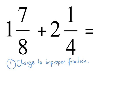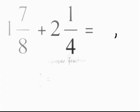So, 1 7 eighths becomes 15 over 8. And 2 and a quarter becomes 9 over 4. That's the first step done.